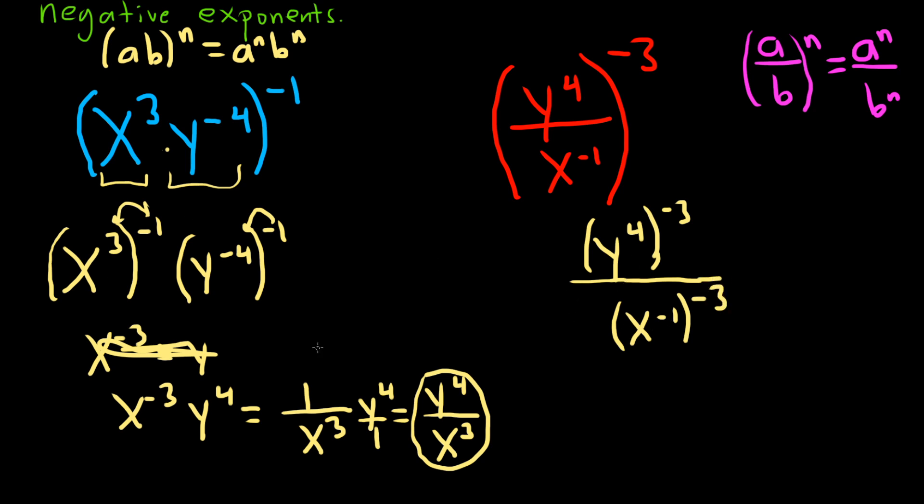And then now we use the same rule we used before. If you have a power to a power, you just multiply. So we get y to the, let's see, negative 3 times 4 is negative 12. And on the bottom we have negative 3 times negative 1 is 3.